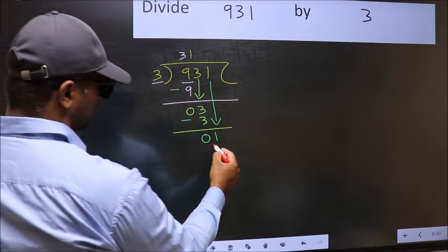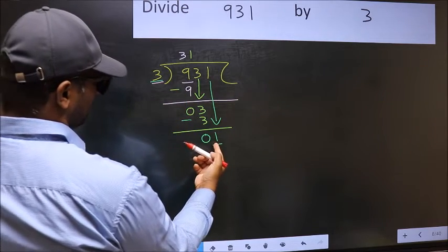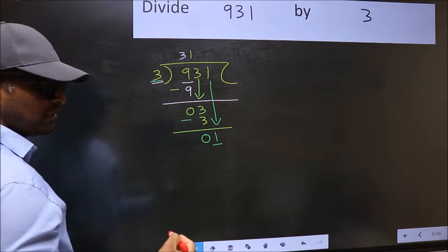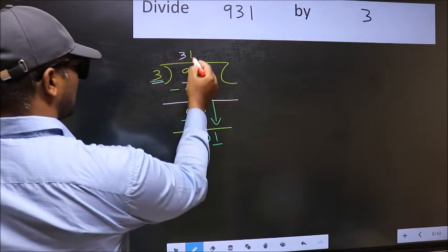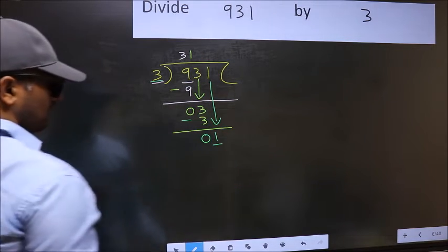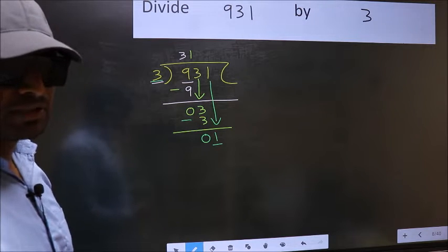Here we have 1, and here 3. 1 is smaller than 3. So what many do is they directly put a dot and take 0. Which is wrong.